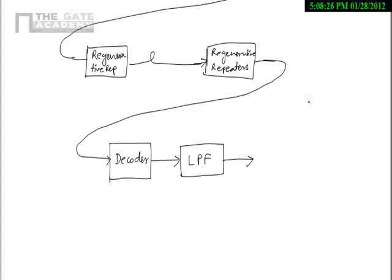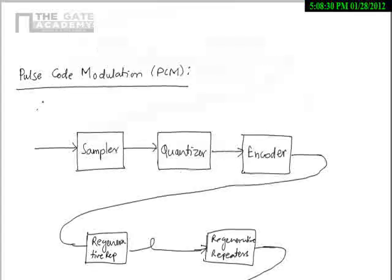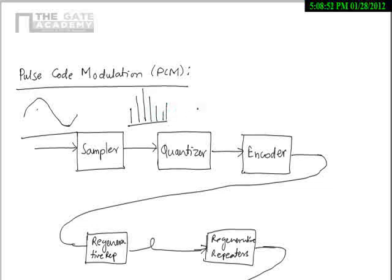Let us go through the block diagram block by block. At the input of the sampler, you have a continuous time signal, which gets sampled to produce discrete samples at the output. The quantizer maps the amplitude of the input signal to a finite set — for example, a value of 7.1 gets quantized to 7. The encoder then converts the quantized signal into bits.